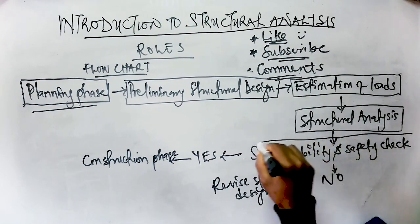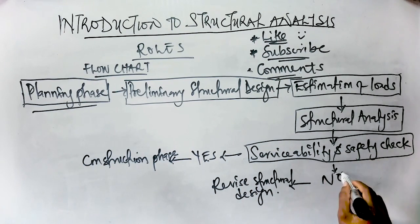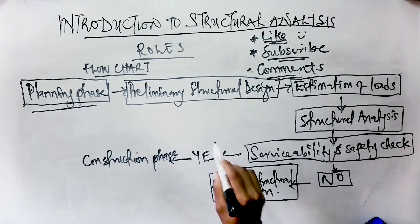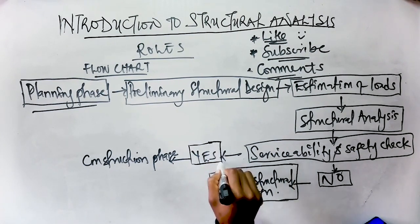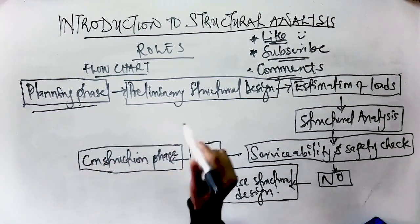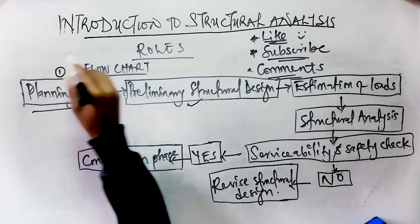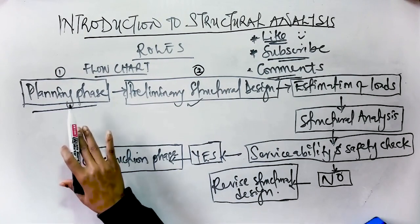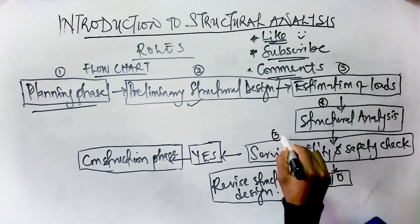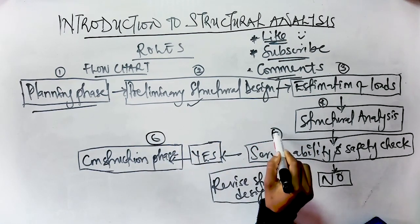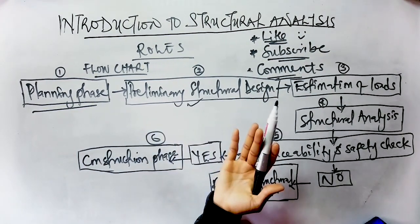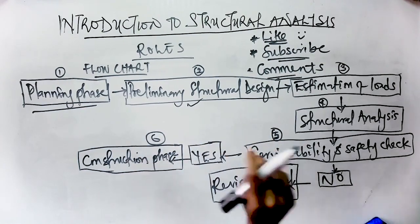In the preliminary structural design phase, the sizes of the various members of the structural system selected in the planning phase are estimated based on approximate analysis, past experience, and code requirements. The member sizes selected are then used in the next phase to estimate the weight of the structure.